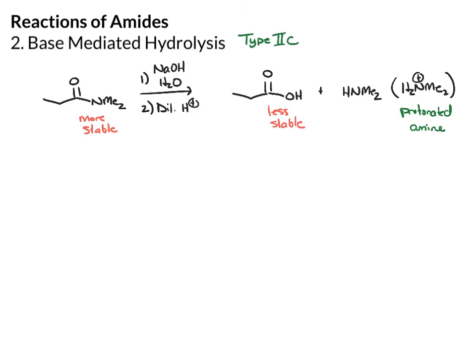For the mechanism, we start by adding hydroxide to the carbonyl. We get the tetrahedral intermediate, and then we lose a leaving group. Most of the time when that happens, you lose the OH and that reverts to starting material, because OH is a much better leaving group than nitrogen.